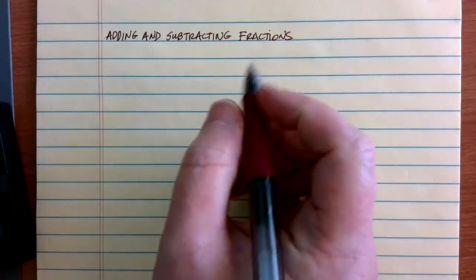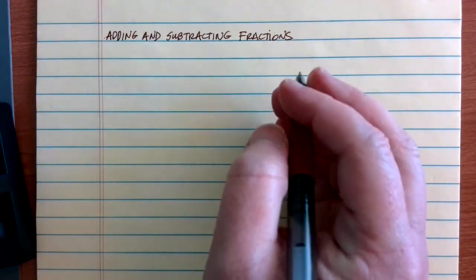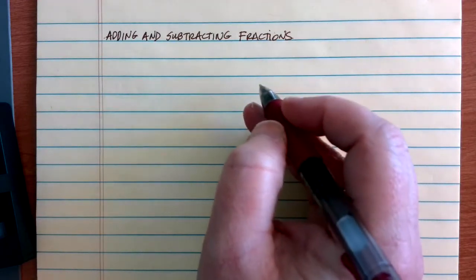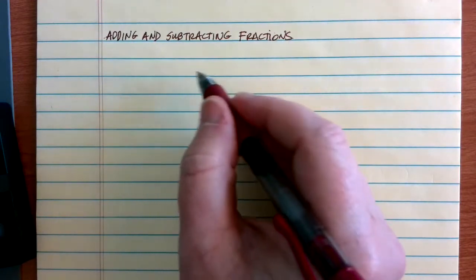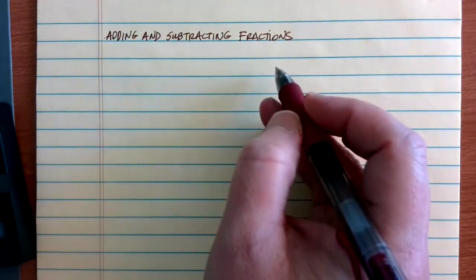One of the things that makes dealing with fractions a little tricky is the fact that we have completely different rules for multiplying and dividing and for adding and subtracting. With multiplying and dividing fractions, we multiply straight across the top and straight across the bottom.